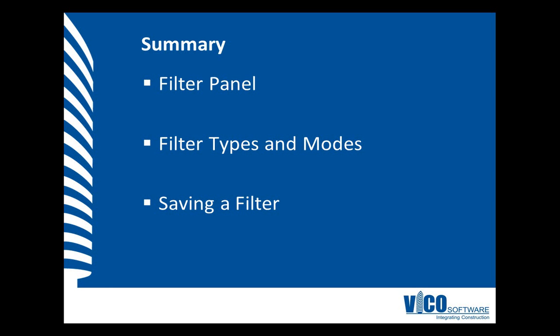In this video, I explained the use of the filtering panel, which contains filter types and filter modes. Filter types define the content that needs to be filtered, and the modes define how that content is filtered — it can be isolated, hidden, or set so that unselected elements remain translucent. I also explained how you can save a filter by typing a name so you can reuse it later when you need to isolate the same elements again.